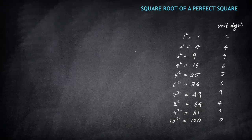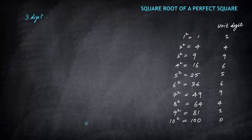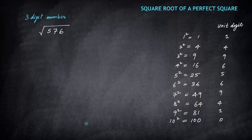We'll start our calculation of square roots with three-digit numbers first. These are numbers which are already perfect squares. For example, let's find the square root of 576.